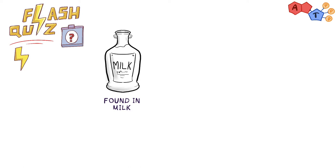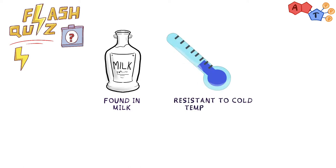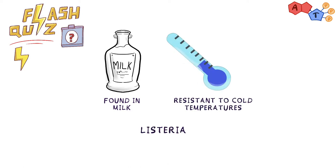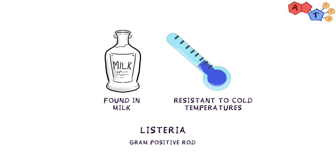Pop quiz time: can you think of another rod that is also found in milk and is resistant to cold temperatures? The answer is Listeria — a gram-positive rod which is also resistant to cold temperatures.